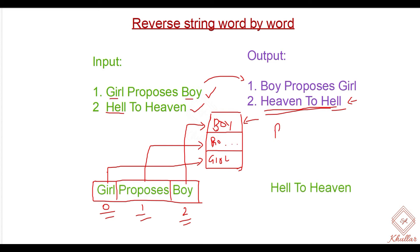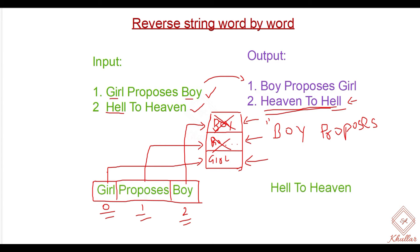We pop the first item 'boy'. This item has been removed. Now the top becomes 'proposes'. Let's pop the next item — 'proposes'. This item also gets removed. Now we pop the last item 'girl' from the stack. So this is our output. We pushed 'girl proposes boy' and we get 'boy proposes girl'.